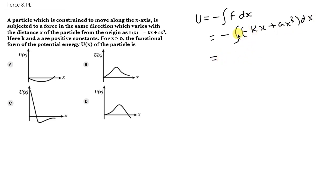We integrate to get plus kx squared by 2 minus ax to the power 4 by 4. We have to find for x greater than zero the functional form of potential energy of the particle. This is the constant that we have to determine.